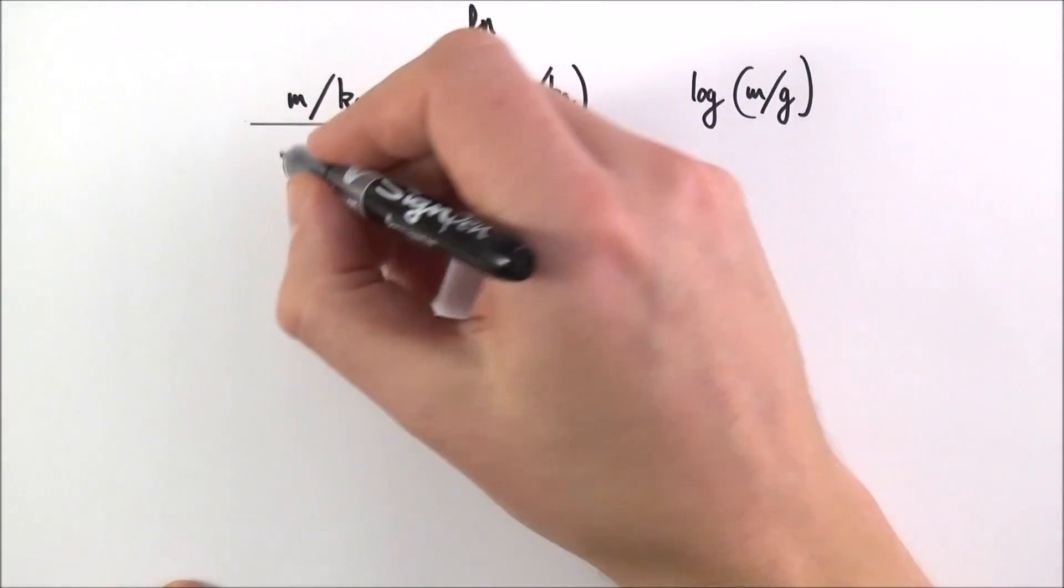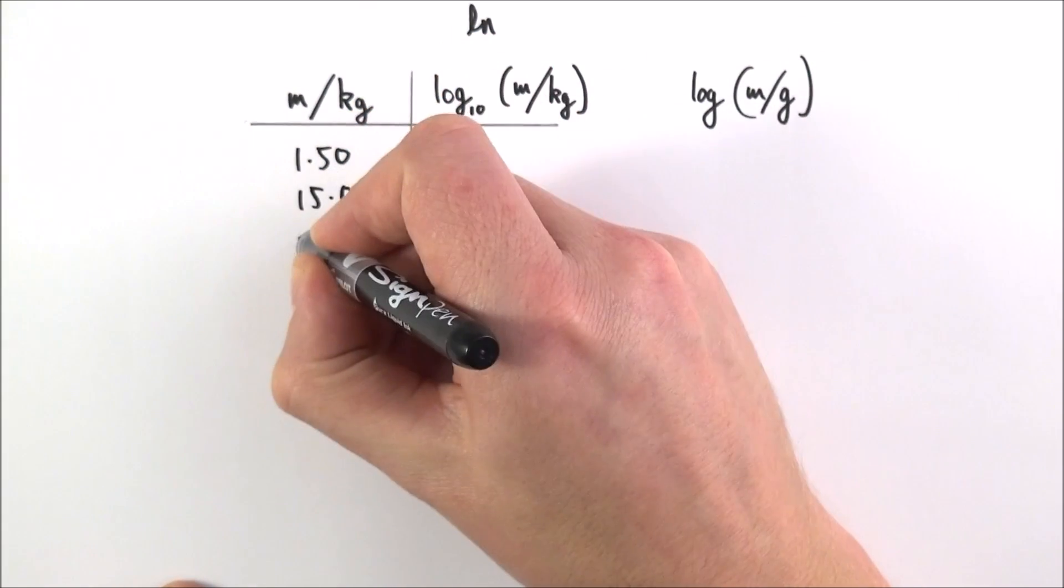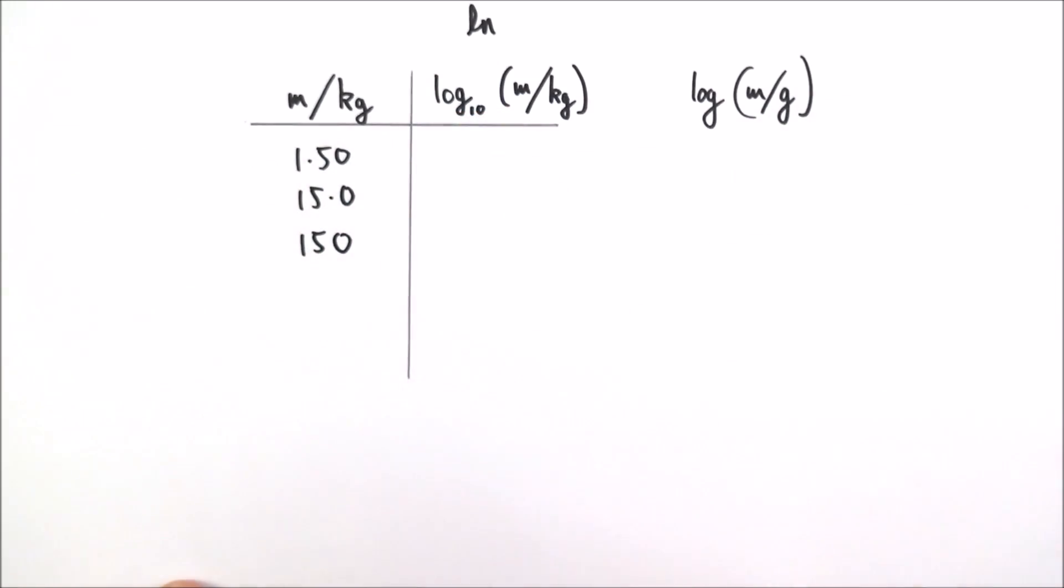Now perhaps we have some values of mass: we might have a value of 1.50, 15.0, and 150.